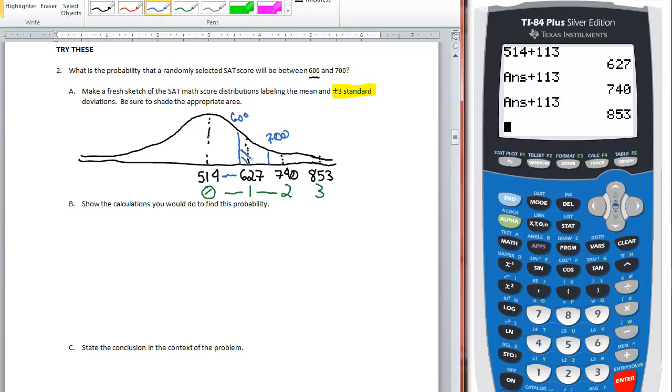And so the area that I'm looking for, the probability, is the area under this section of curve right here. So now show the calculations you would do to find this probability.